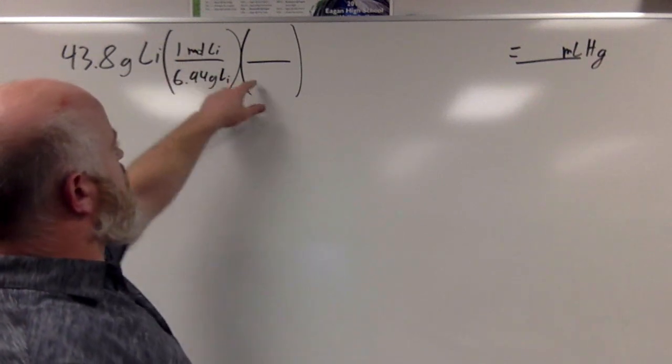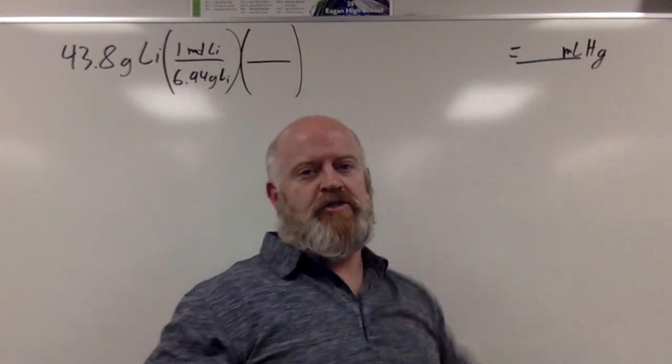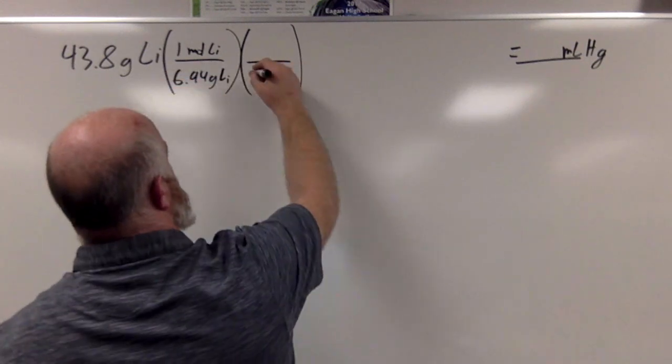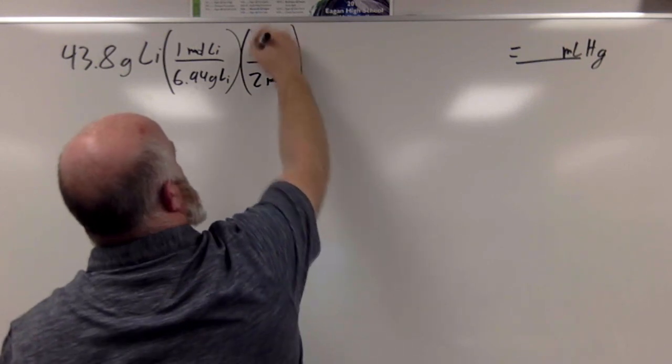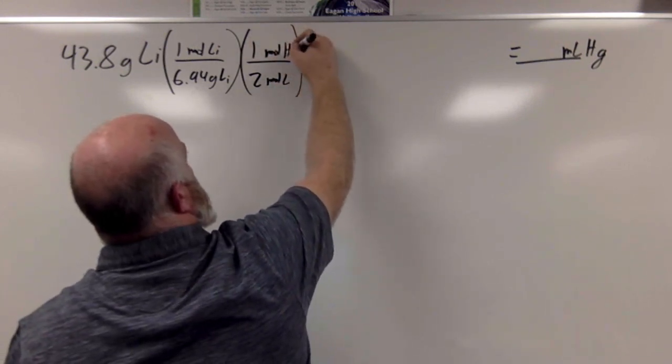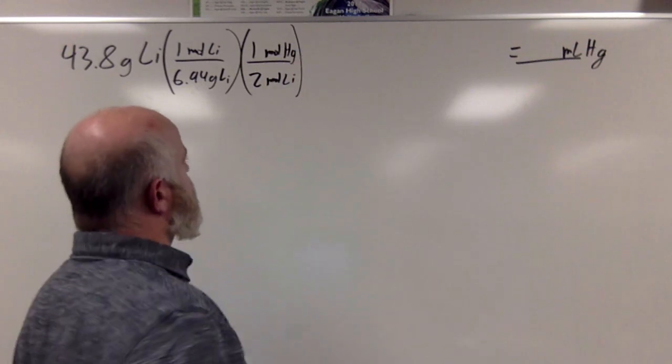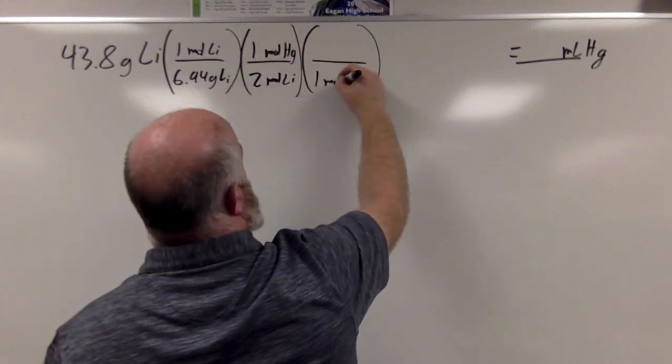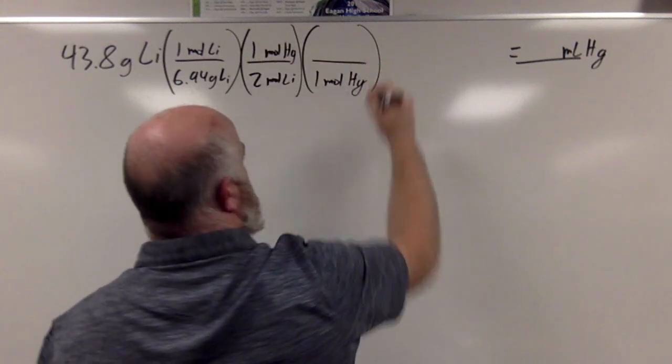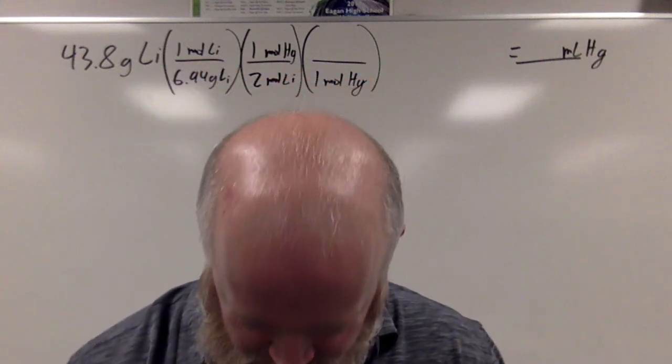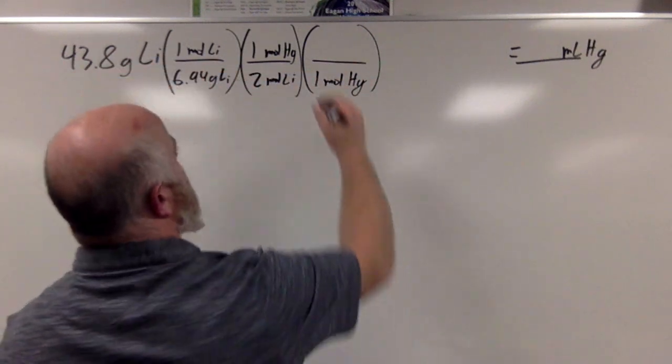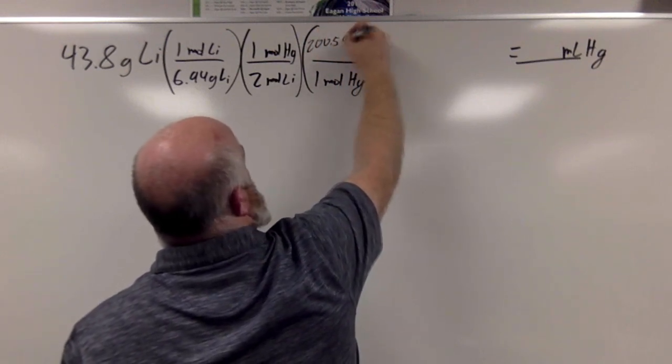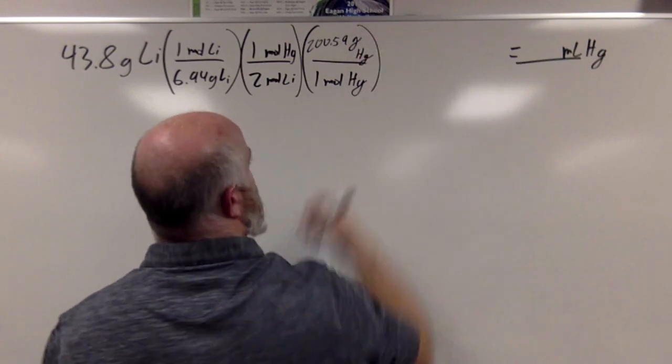I know that my moles of lithium, I'm going to go to moles of mercury. So we'll go to my balanced equation. I have 2 moles of lithium for every 1 mole of mercury from our balanced equation. And then I can say, for every 1 mole of mercury, I can look up mercury's atomic mass. And mercury's atomic mass is 200.59. I get 200.59 grams of mercury.